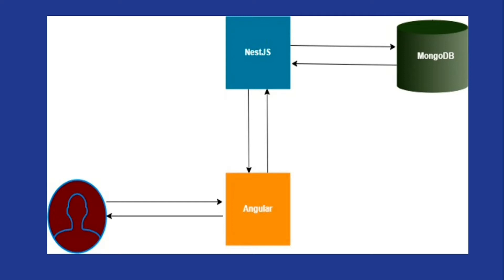The physical storage of data exists in the database, so the API depends upon the database. Once the data is received, the application returns that data as a response to our client application — the Angular application — in JSON format. Angular application then dynamically binds and displays the data on the UI. This is how the flow works with Angular, NestJS, and MongoDB communication for a simple user request.